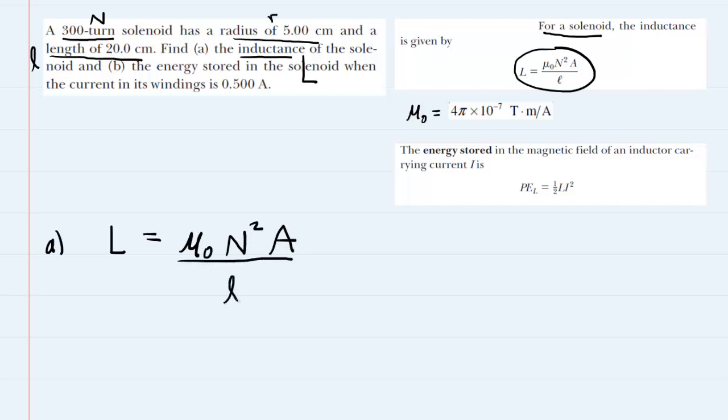Now the question doesn't give us the cross-sectional area of the solenoid, it only gives us the radius of 5 centimeters. That implies that the solenoid is circular shaped, so the cross-sectional area would be the area of a circle, which is pi r squared. So we're going to rewrite this equation, and for the area we will substitute pi r squared.